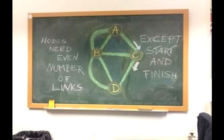So we've discovered that if you can find a route, then that must be true, that there must be either no nodes with an odd number of links or exactly two.